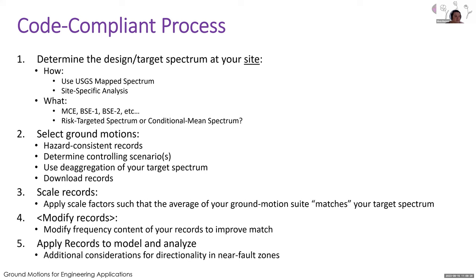The process starts with determining your design spectrum at the site. You can use the USGS map spectrum or do a site-specific analysis. You also need to decide the level — are you designing for MCE or different level earthquakes? Then decide whether you're using your spectrum or doing conditional mean spectra. I'm not going to talk about the conditional mean spectrum today because it's a whole other topic, but there are plenty of other resources about it.